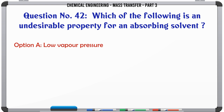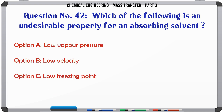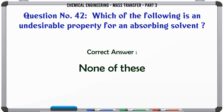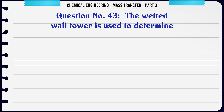Which of the following is an undesirable property for an absorbing solvent? A) low vapor pressure, B) low viscosity, C) low freezing point, D) none of these. The correct answer is: none of these (low vapor pressure, low viscosity, and low freezing point are all desirable properties).